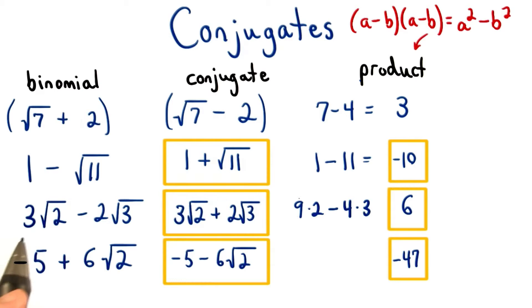For the second one, when we square the a term, we'll have 9 times 2. We square the 3, and we square the root 2. For b squared, we'll square 2, which is 4, and we'll square the square root of 3, which equals 3. We know 9 times 2 is 18, and 4 times 3 is 12. This gives us a final answer of 6.